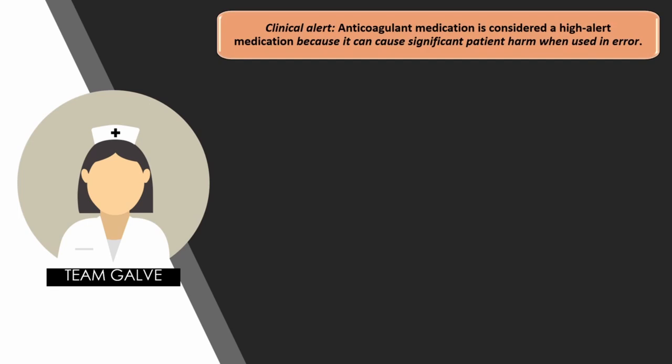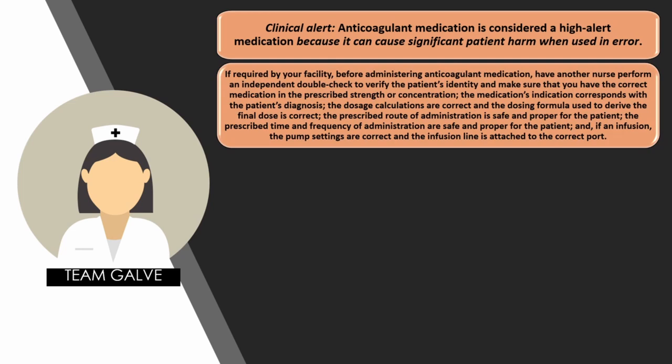Clinical alert: anticoagulant medication is considered a high-alert medication because it can cause significant patient harm when used in error. Anticoagulants require double independent checking by two licensed nurses. Before administering anticoagulant medication, have another nurse perform an independent double check to verify: the patient's identity, correct medication in prescribed strength or concentration, that the medication's indication corresponds with the patient's diagnosis, that dosage calculations are correct, that the prescribed route of administration is safe, that the prescribed time and frequency of administration are safe, and that the pump settings are correct and the infusion line is attached to the correct port. Hence, labeling and line reconciliation are very important.